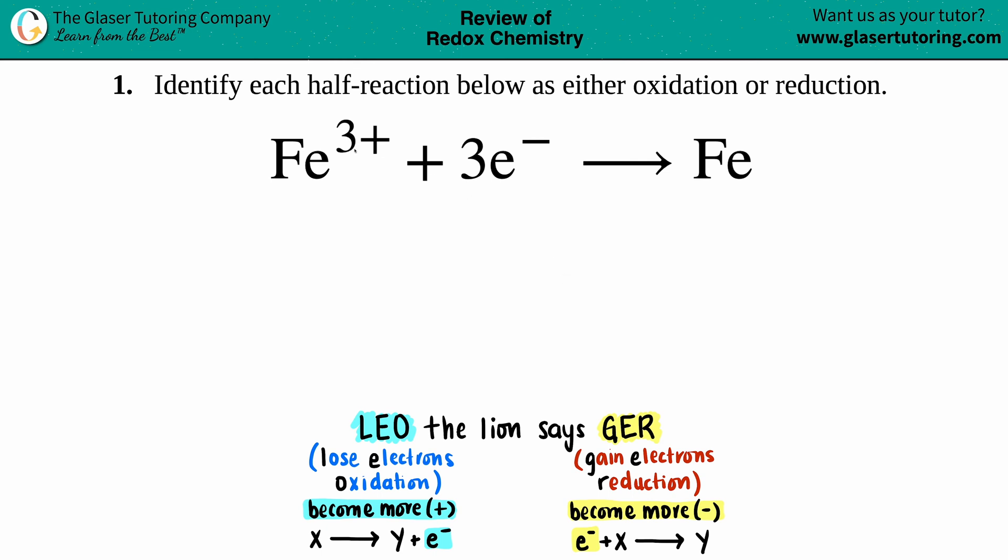Number one: identify each half reaction below as either oxidation or reduction. In this example we have Fe³⁺ plus three electrons (3e⁻) which yields iron metal (Fe). So we're talking about oxidation or reduction - whenever we're discussing oxidation or reduction, or redox, which is the combination of reduction and oxidation.